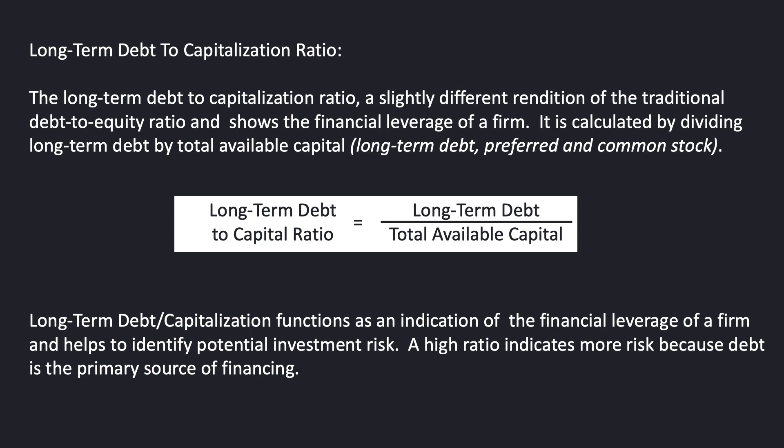It's calculated by dividing the long-term debt by total available capital — long-term debt, preferred, and common stock are all factored into this. The long-term debt to capitalization ratio is calculated by taking that long-term debt and dividing it by total available capital.